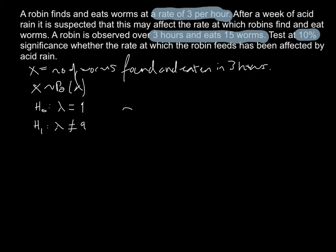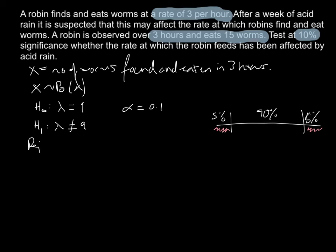Our significance level is 0.1. Because it's a two-tailed test, we split the significance level: 90% of values lead us to not reject H0, but any value falling into 5% in the upper tail or 5% in the lower tail leads us to reject H0. We will reject H0 if the probability of X less than or equal to the observed value (lower tail) is less than 0.05, or if the probability of X greater than or equal to the observed value (upper tail) is less than 0.05.